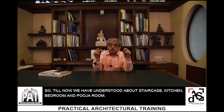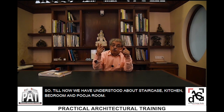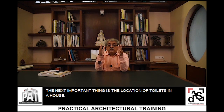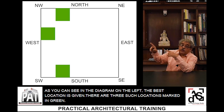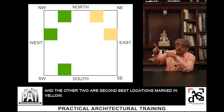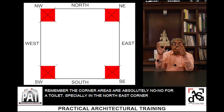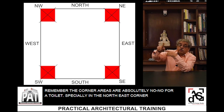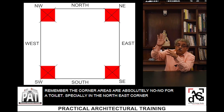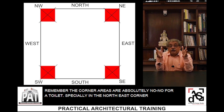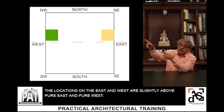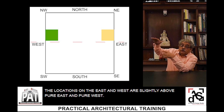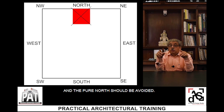So till now we have understood about staircase, kitchen, bedroom, and puja room. The next important thing is the location of toilets in a house. As you can see in the diagram, the best locations are three such positions marked in green, and two second-best locations are marked in yellow. The corner areas of the house are absolutely a no-no for a toilet — especially the north-east corner. The locations on the east and west are slightly above the pure east and pure west, and the pure north should be avoided.